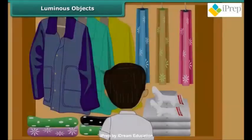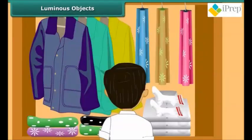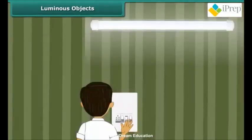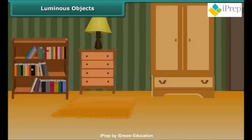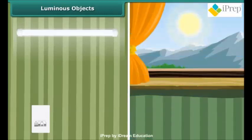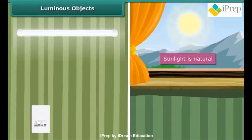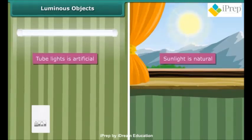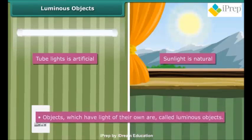Once you locate the socks, you switch the lights off because there is sufficient daylight. We just talked about two types of light: the light from the tube lights and daylight, which is the light from the sun. Sunlight is natural light, while light from tube lights is artificial.